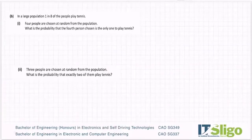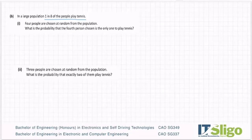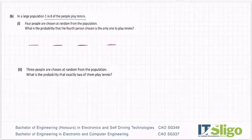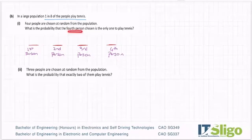Part B. In a large population, one in eight of the people play tennis. Four people are chosen at random from the population. What is the probability that the fourth person chosen is the only one to play tennis? How I got my head around these was: if four people are chosen, then I need four probabilities — one for each person. What is the probability of somebody playing tennis? One in eight.